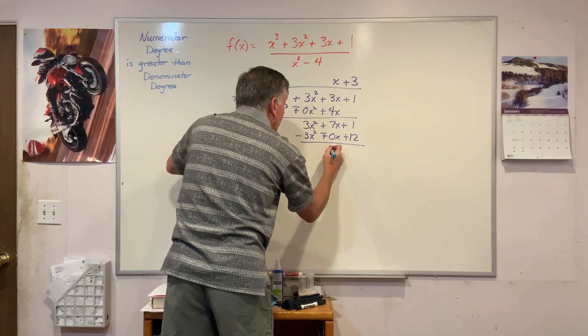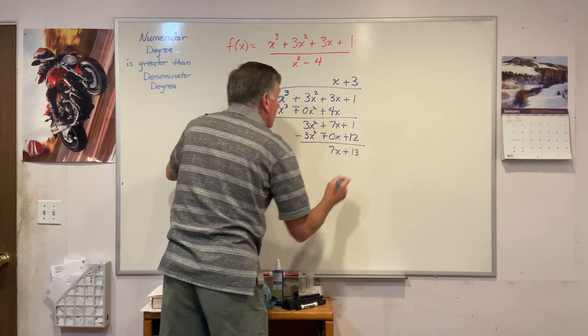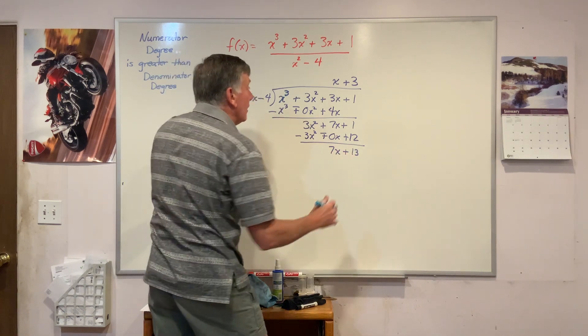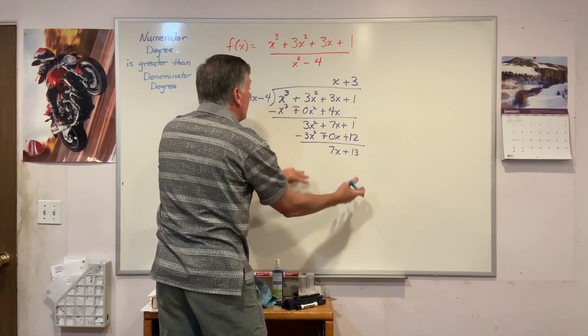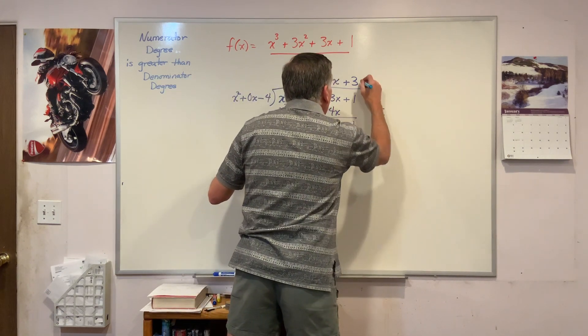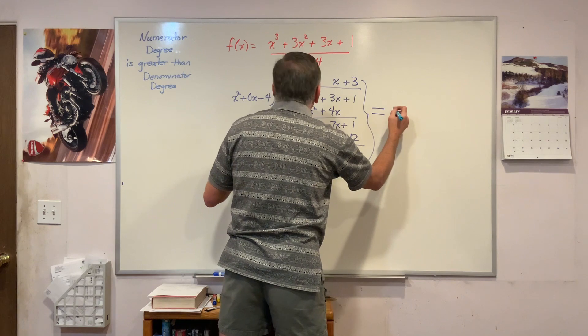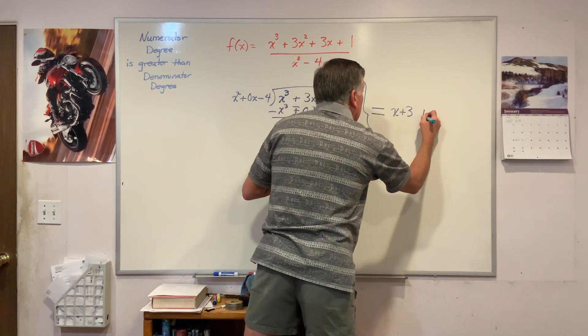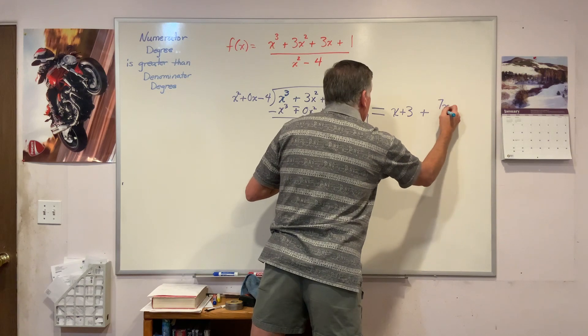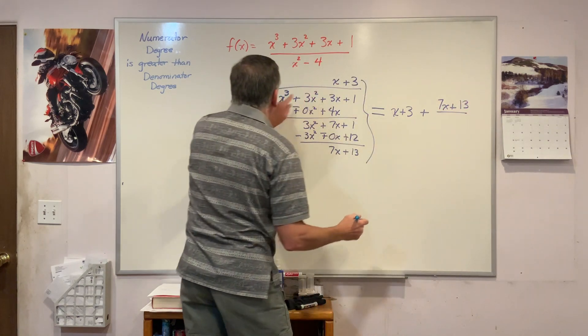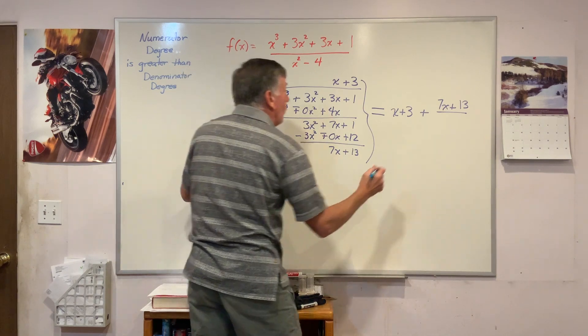And I get 7x plus 13 all over, or that's where I end. So now I can write the result of this polynomial division as this whole thing is equal to x plus 3 plus 7x plus 13 all over x squared minus 4.